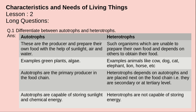Heterotrophs are organisms that are unable to prepare their own food and depend on others to obtain their food. Examples include animals such as cow, cat, dog, elephant, lion, horse, and we humans also depend on other organisms for food.